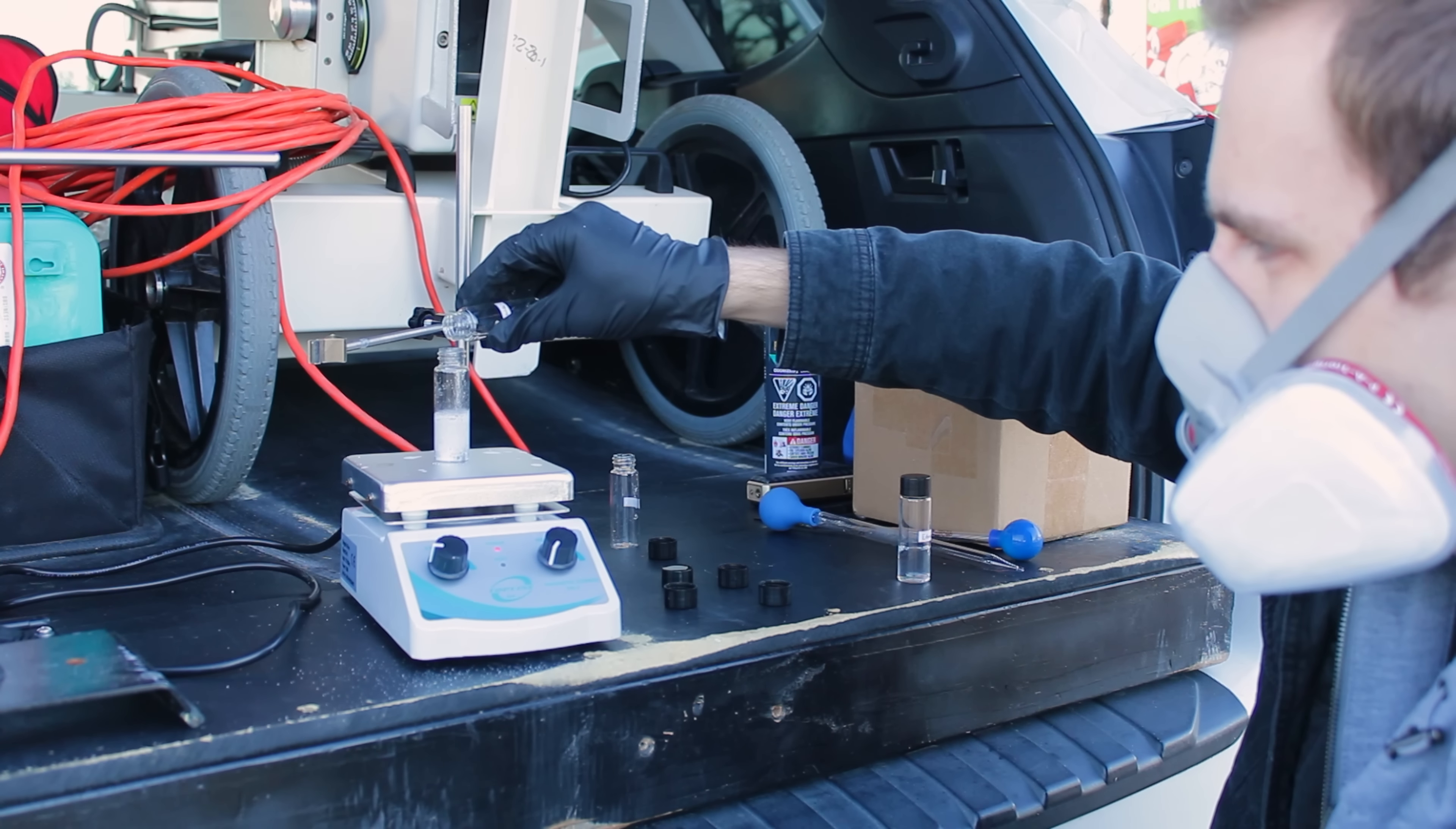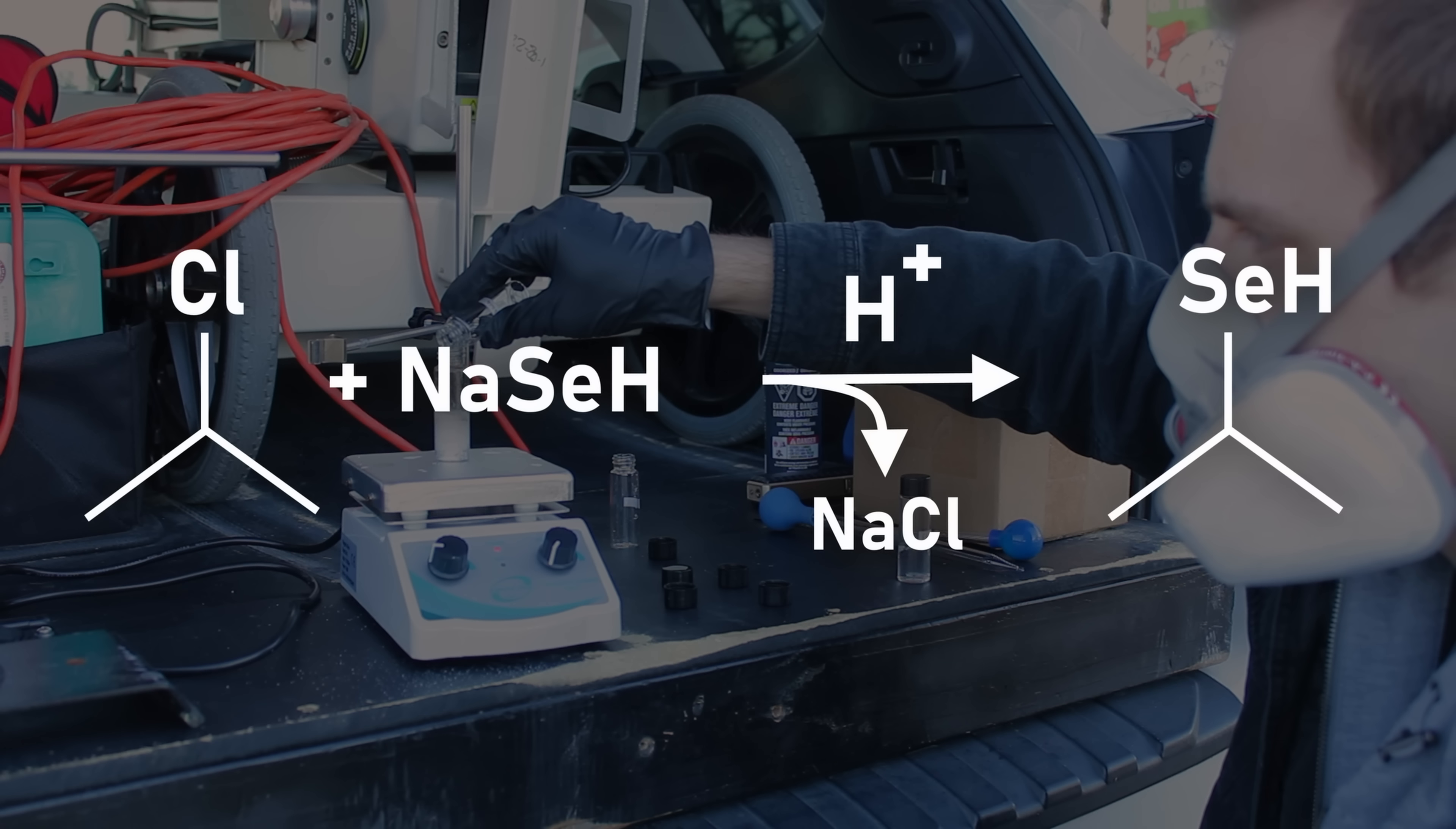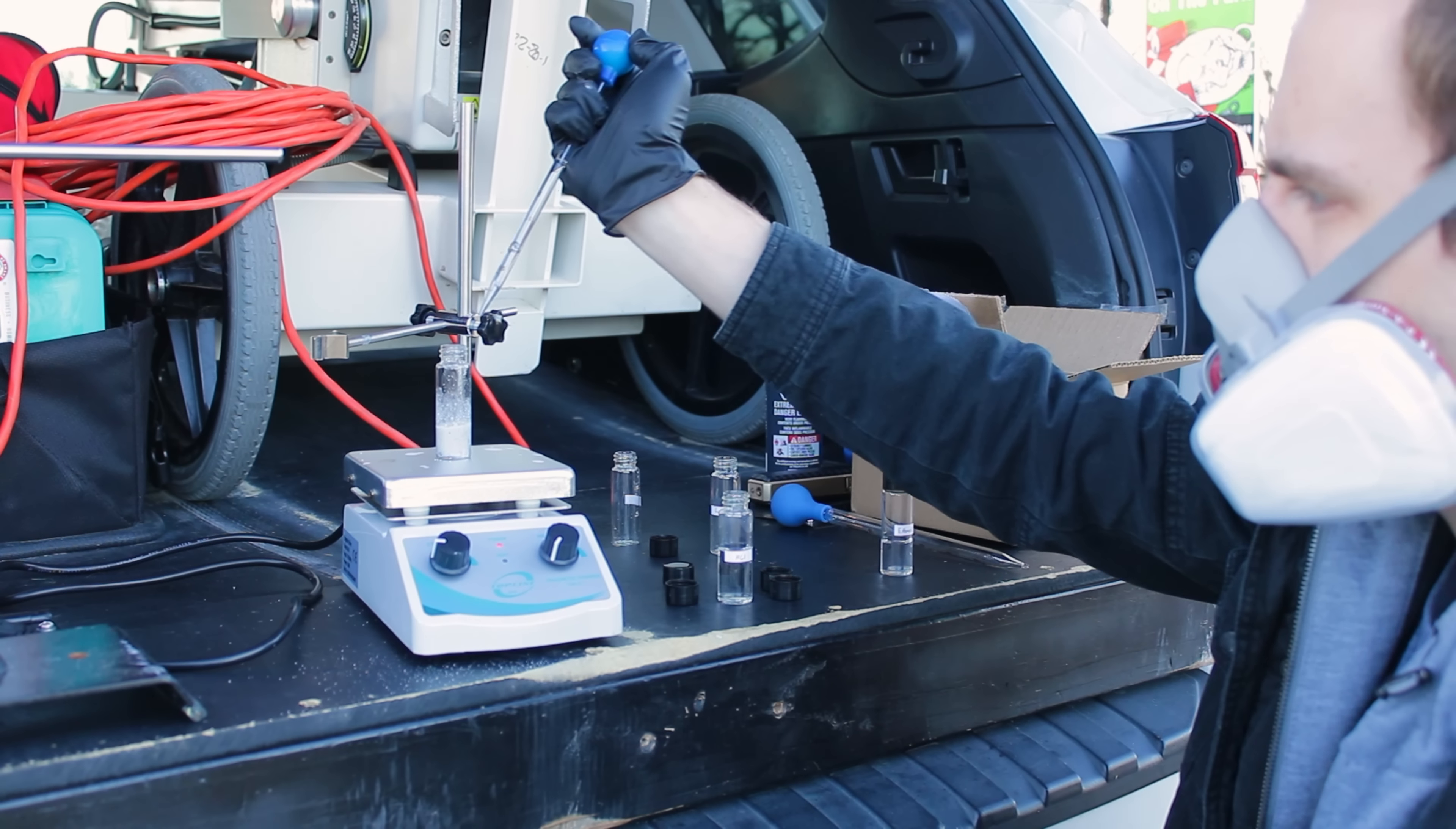Anyway, once the reaction calmed down, 1.3 grams of isopropyl chloride was added to the mixture, followed by 1.6 milliliters of 30% hydrochloric acid. The authors didn't talk much about this part of the reaction, but from what I can tell, it's basically an acid-catalyzed double displacement that swaps the halide on the alkyl group for the hydroselenide portion of the sodium hydroselenide, forming the final selenol. Whatever the case, it seemed to work just fine.